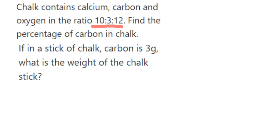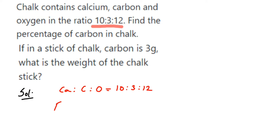In the solution, I'm going to use symbols — for calcium it is Ca, for carbon it is C, and for oxygen it is O — in a ratio 10:3:12. I'm only interested in carbon, which has ratio value 3. Whenever ratios are given, I can write them in fractional form. So the fraction of carbon: from the total parts, how many total parts are there? You have to add all.